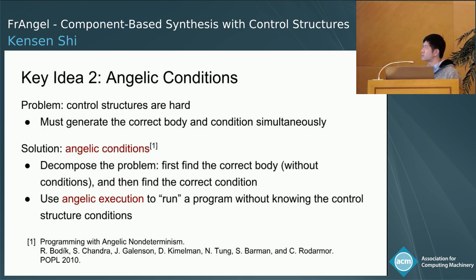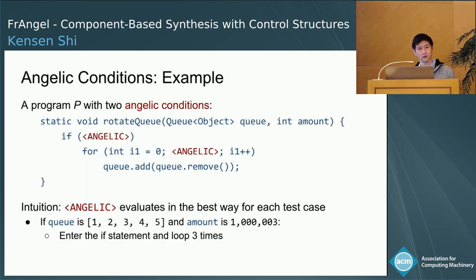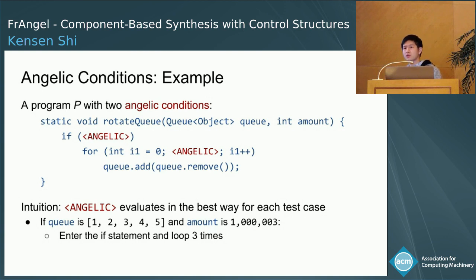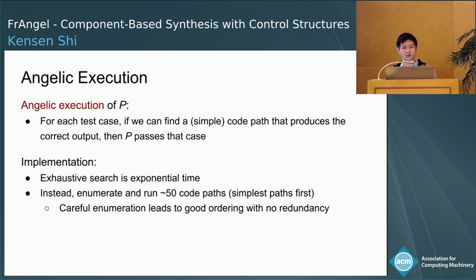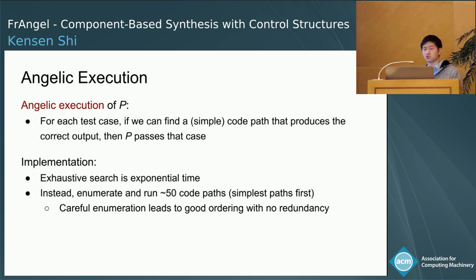Here's an example for the rotateQ problem. This program is an angelic program because it has two angelic conditions. You can think of the angelic operator as evaluating in the best way for each test case. If the queue has five elements and the amount is a million and three, we can get the correct behavior by entering the if statements and then looping for exactly three times. For each test case, if we can find a code path that produces the correct output, the program passes that test case. An exhaustive search would be exponential, so instead we enumerate and run about 50 code paths, prioritizing the simplest ones first, using an enumeration strategy with no redundant executions.